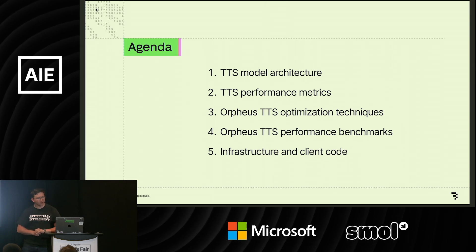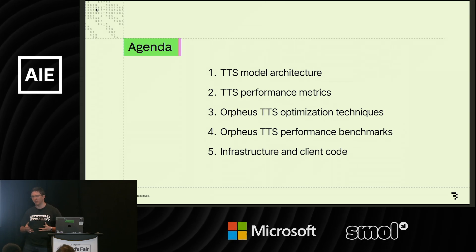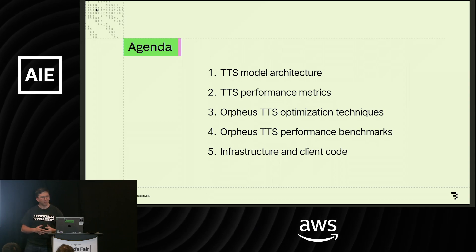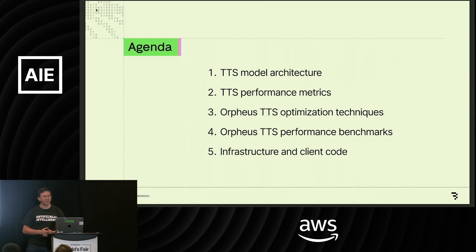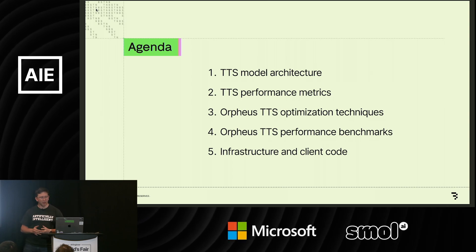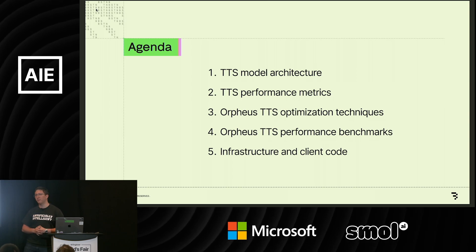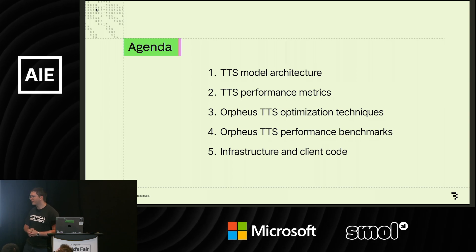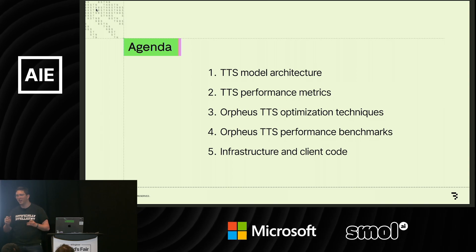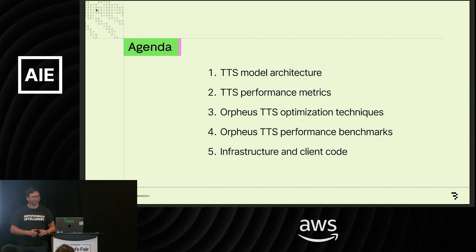Quick agenda: we're going to talk about TTS model architecture — what is a text-to-speech model when you look at the config in Hugging Face? What performance metrics are we looking at? What optimization techniques can we use to make the model better? How do we measure success? And finally, what can we do on the infrastructure and client code side to not add all that latency back after doing runtime work?